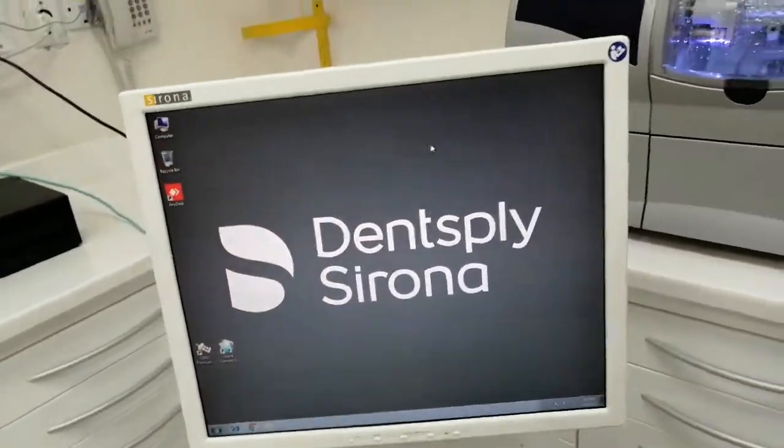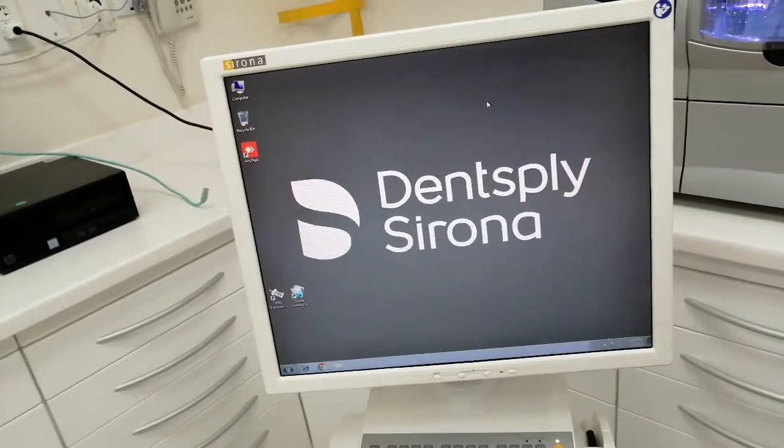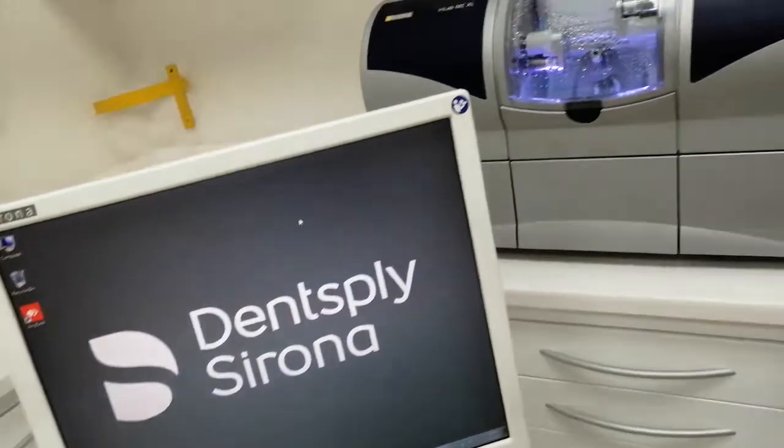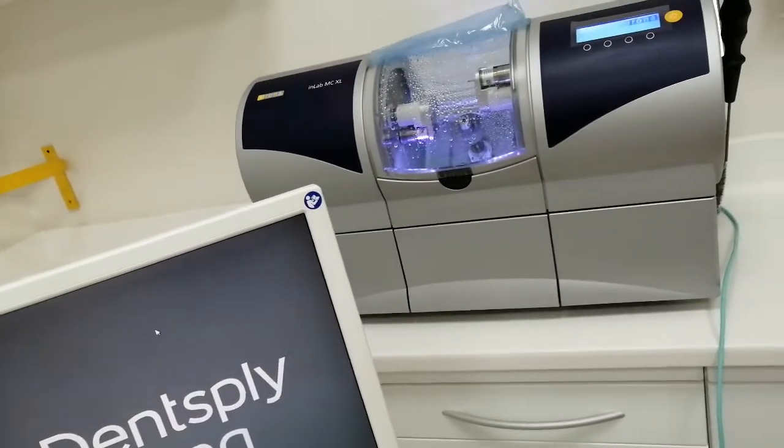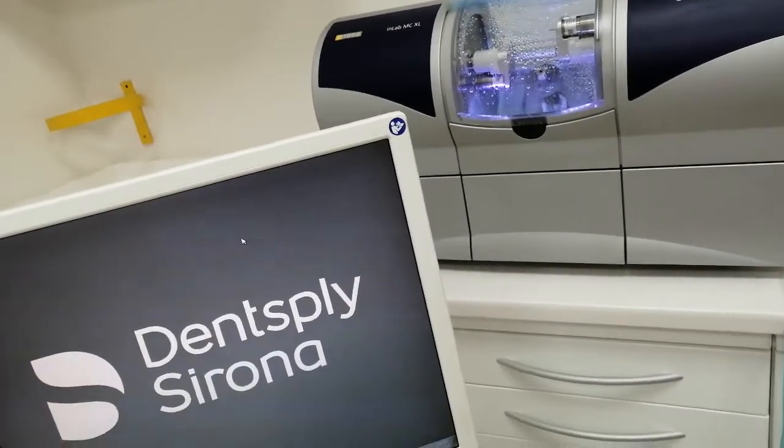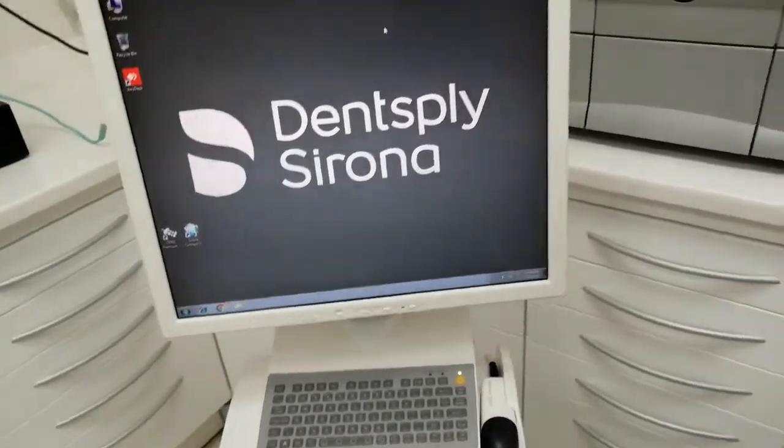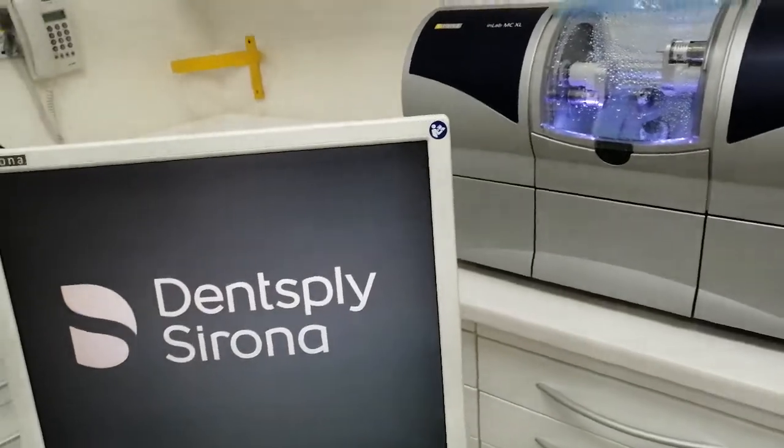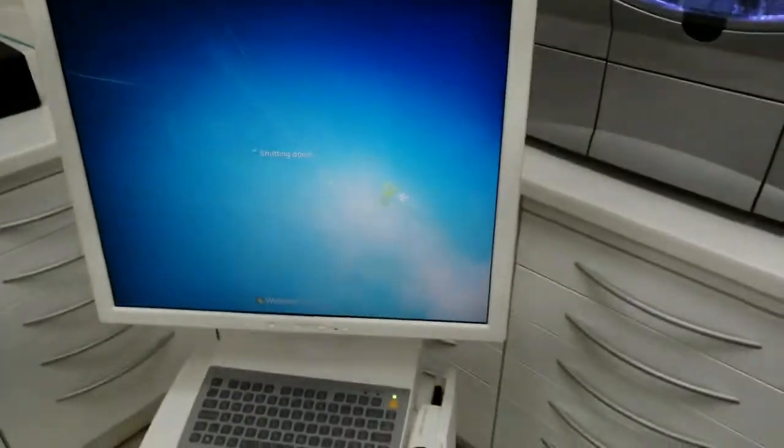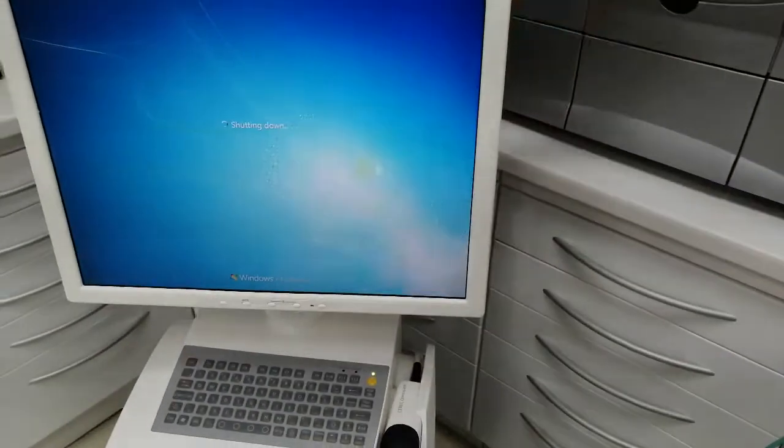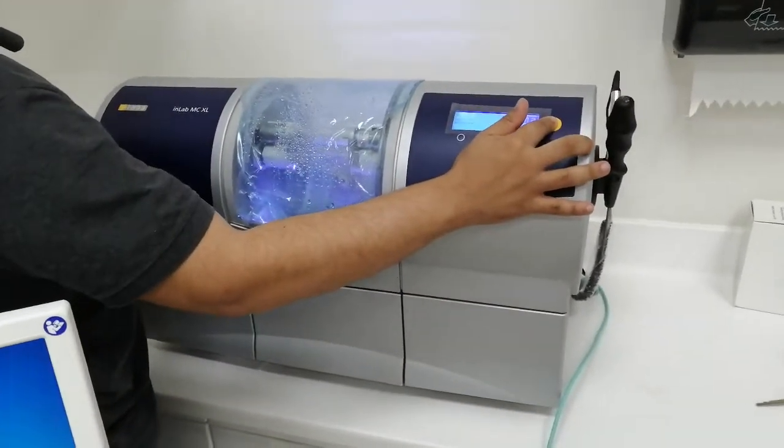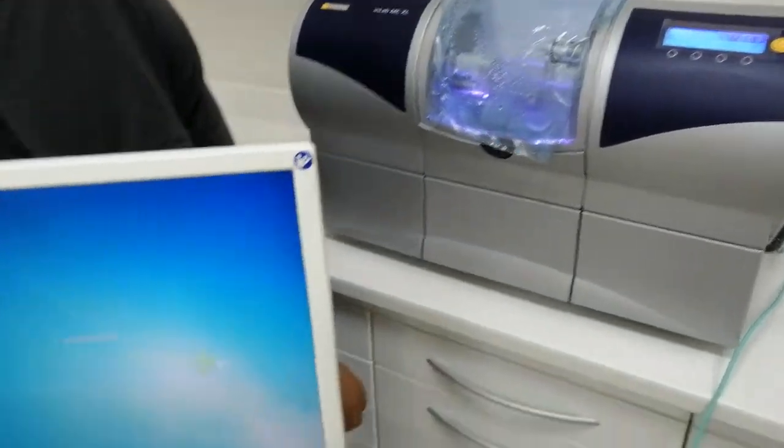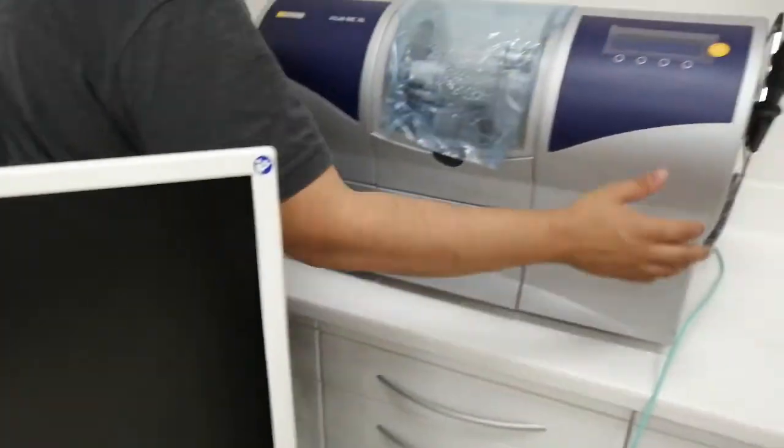This machine is very smart. When you need to change the bars, change the water, or make a calibration, it gives you a message. That's good. Finally, this is an ordinary computer. We can shut down from here. Also we can close the machine from this side. All right, let's go.